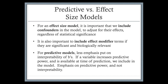A quick reminder of predictive versus effect size models. When building an effect size model — where we want to estimate what effect X1 has on Y, or what effect some variable has on some health outcome — it's important that we identify confounders and include them in the model so that we can adjust for these. It doesn't matter if they're statistically significant or not; if a variable is a confounder, we should include it in our model.